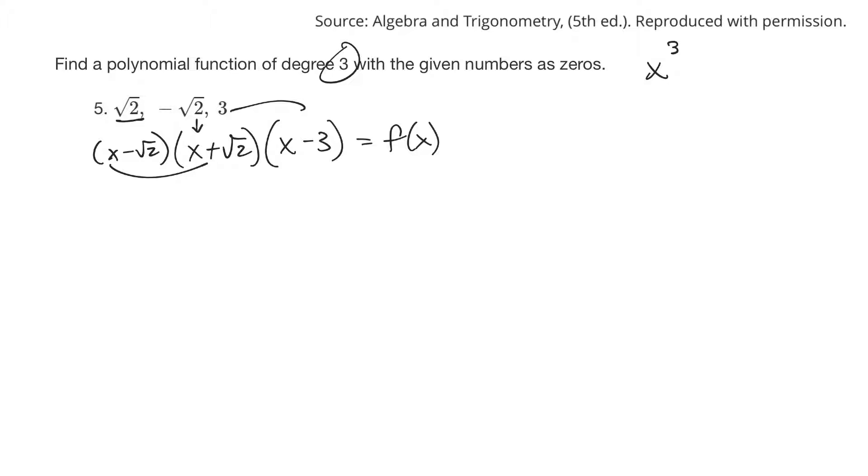So x times x is x squared, this would be plus root 2x, this would be minus root 2x, and this would be minus square root of 4, which is 2. And then these cancel out, so really I just have x squared minus 2.